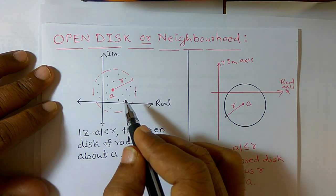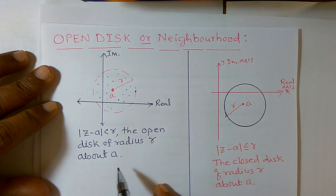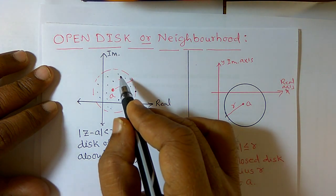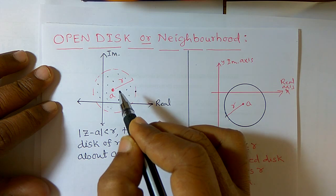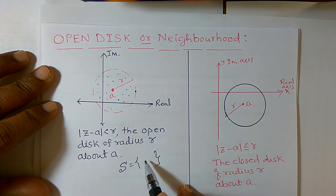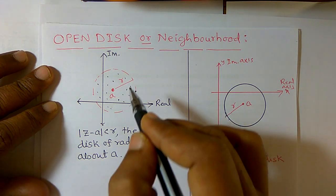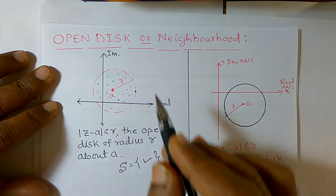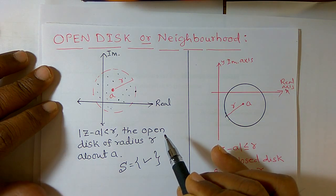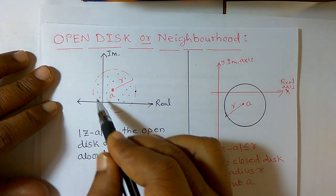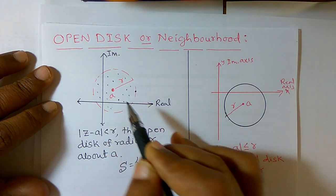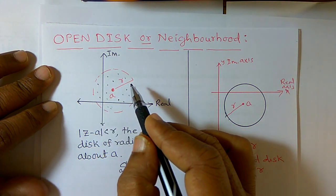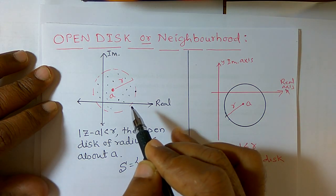Now consider a set containing some values — many values belong to this circle. All those values are present in this set except the values on the boundary line, that is, values on the circumference of the circle. Such a set is called an open disk. So, open disk means the circle contains values, all interior values belong to the set, except values on the circumference.